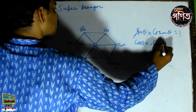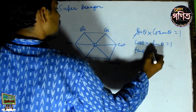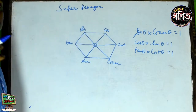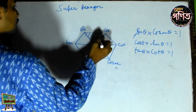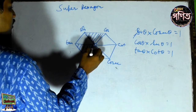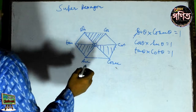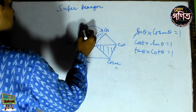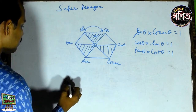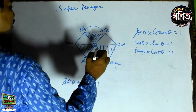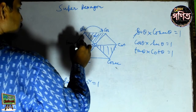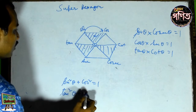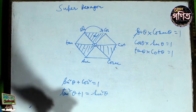Cos theta into sec theta is equal to 1. The second step is 1.